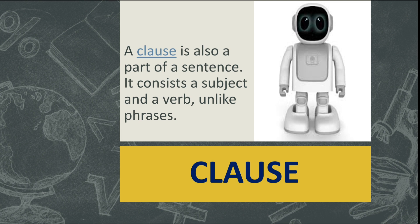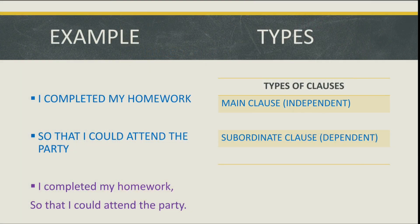Next, let's move on to clause. In the robot analogy, the robot is complete but has no charge, so it cannot work on its own. A clause has all parts — subject and verb are both present — but it cannot always act as a complete sentence or stand alone. If a clause does stand alone, it becomes a simple sentence, also called an independent clause.